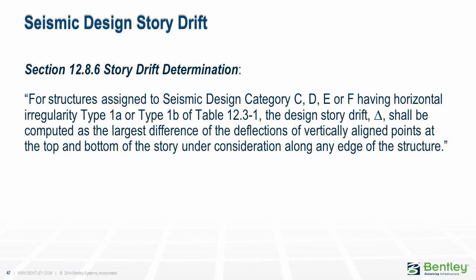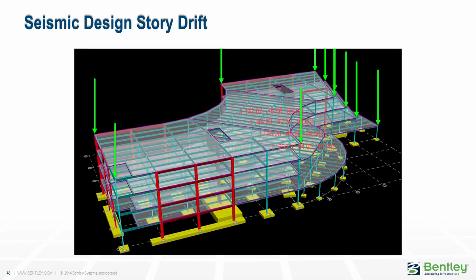For structures defined as having a torsional irregularity or an extreme torsional irregularity — as measured by the difference in drift at one end of the building versus the other and characterized by significant rotation under design forces — the code requires that drift be the worst measured at any point along any edge of the structure. Rather than using drift at the centers of mass, you must use the drifts calculated at the extreme ends for these irregular structures. These values include the effect of torsional rotation, not merely lateral translation. This requirement applies only to those structures for which any floor is defined as torsionally irregular per Table 12.3-1.